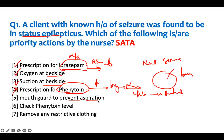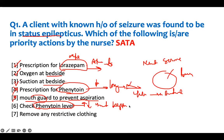You might want to prevent aspiration, but nothing goes into their mouth when they are seizing. Therefore, putting in a tongue depressor is wrong — nothing goes into their mouth during a seizure. Checking the phenytoin level is also wrong. Once again, phenytoin is a maintenance medication. Checking whether the level is high or low is not going to change anything right now — the patient is already seizing. Whether it's Keppra, carbamazepine, or phenytoin, if they are on it and still seizing, you don't need to check levels. They are past that stage. They are in the acute problem — deal with the acute problem.